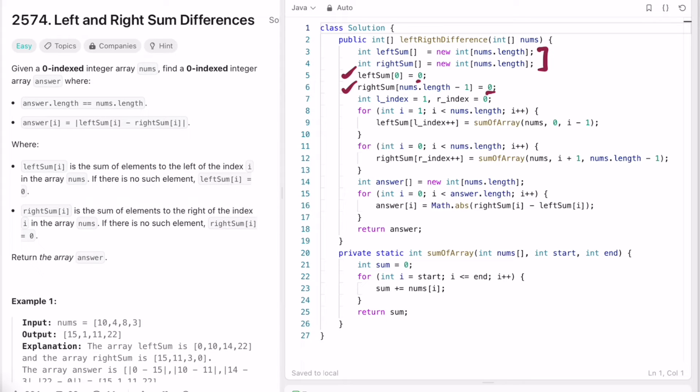Now here we are forming the leftSum array, and here we are forming the rightSum array. To fill the leftSum array we're using the leftIndex variable, and each time we're incrementing it before starting the next iteration. And to fill the rightSum array we are using the rightIndex variable.